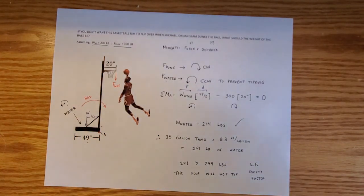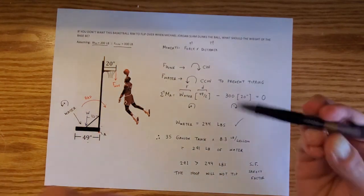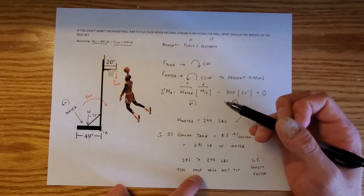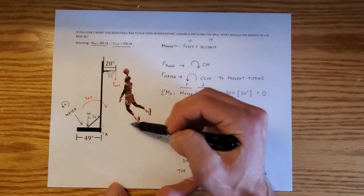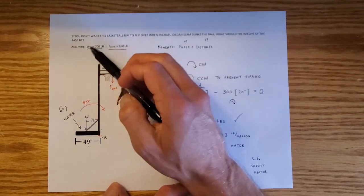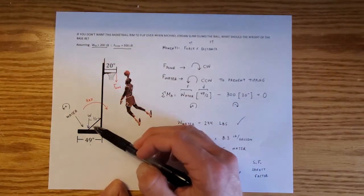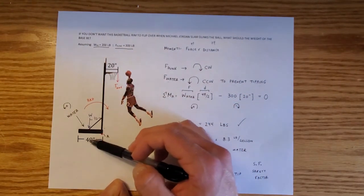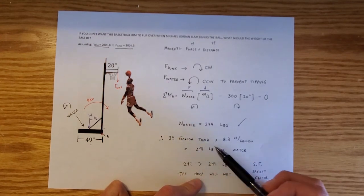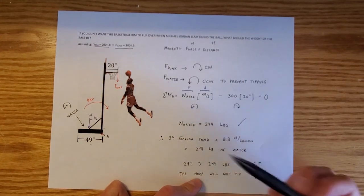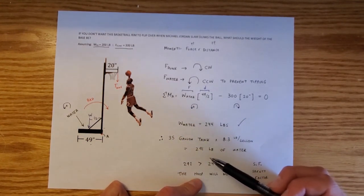The engineers who built this basketball hoop did their job. We're not accounting for the weight of the metal and plastic, which would actually add even more counterclockwise force. We'll talk about safety factor later in the course — if the tank held exactly 244 pounds, one extra pound of force from Michael Jordan would send the hoop toppling. As an engineer, that's the process you follow: analyze conditions, make assumptions, and design a system to prevent failure.